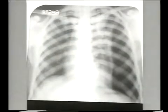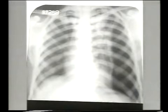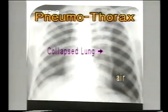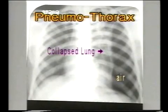In this X-ray, note the peripheral radiolucent area on the left side with no bronchovascular markings. This uniformly black area represents a collection of air in the pleural cavity or pneumothorax. The lung is collapsed and you can see that it is more radio opaque and its border is seen as a thin white line demarcating the collapsed lung.